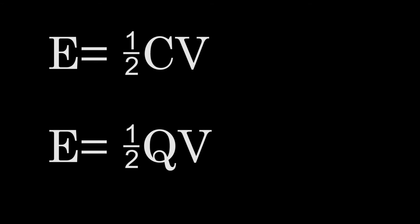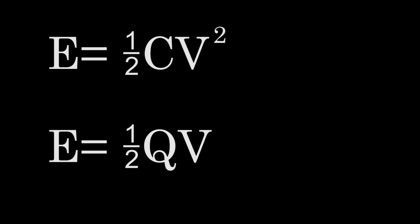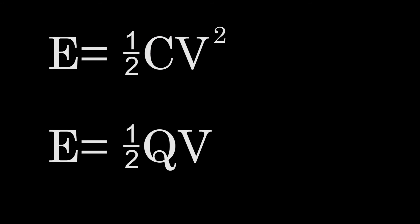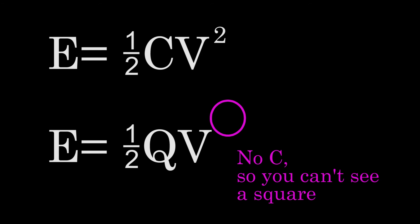But now we have a problem. In one of these formulas the V is squared, and in one of these formulas the V is not squared. Here's how I remember which is which: if you use the formula with the C in it, then you can see the V squared. And if you use the formula that doesn't have the C in it, then you can't see the V squared.